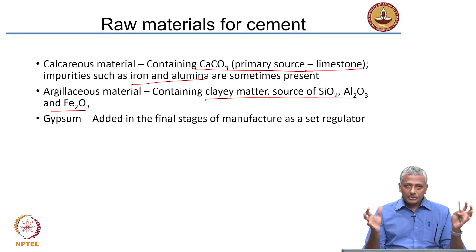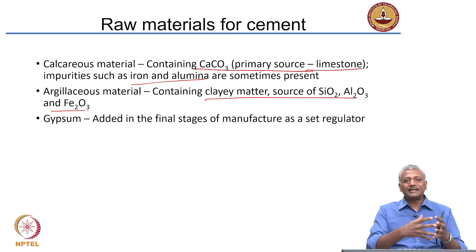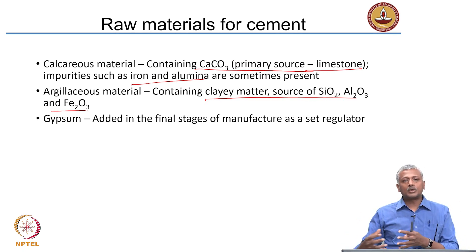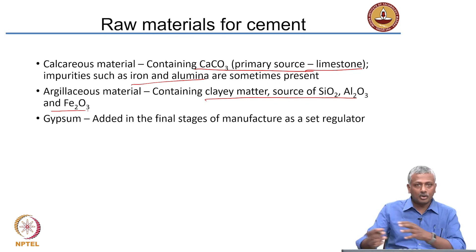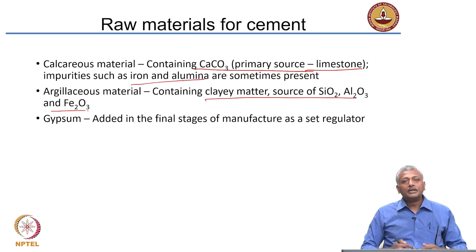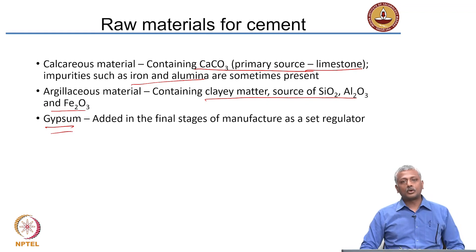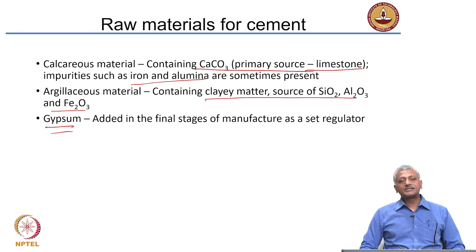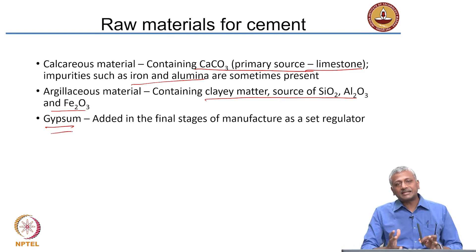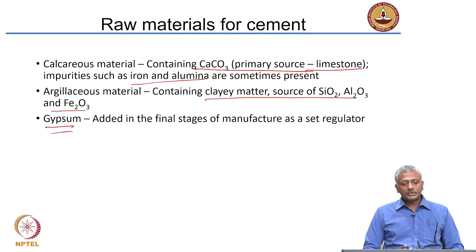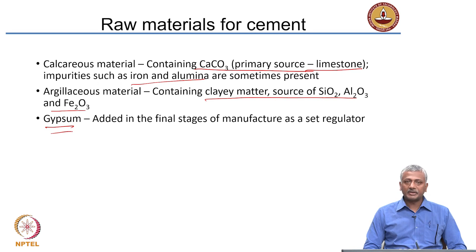This mixture is burnt and converted to what we call clinker. You also add another additive called gypsum, which is a material you are all familiar with. Gypsum is added in the final stages of manufacture to control the rate at which cement will set once it reacts with water. So you have these three principal raw materials for manufacture of cement.